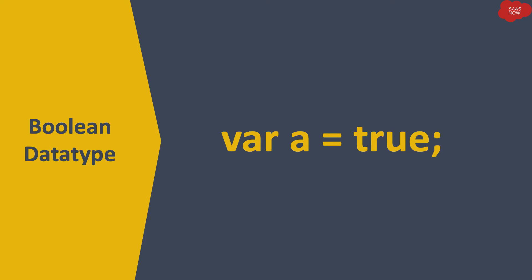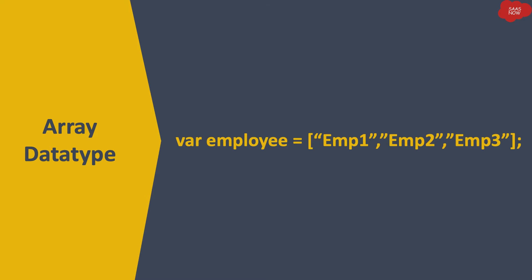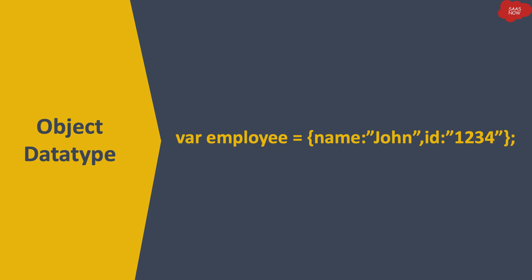Here 'a' is a variable which stores the value true, so 'a' is called a boolean data type variable. Then we have the array data type variable — when you provide multiple values in square brackets separated by commas to a variable, it is called an array. In this example, 'employee' is a variable which stores multiple values like emp1, emp2, emp3 in square brackets, making it an array data type variable.